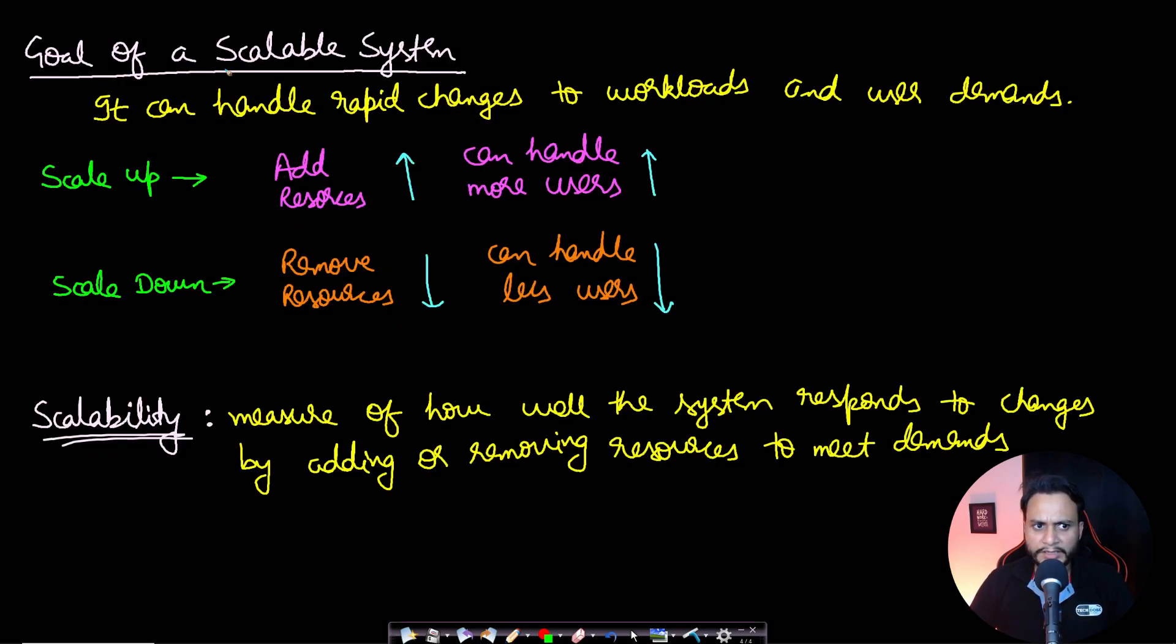Therefore, what is the goal of the scalable system? The goal is it can handle rapid changes to the workloads and the user demands. If the number of users are increasing and you have to serve higher load, then we will add resources and this is known as scaling up. When the number of users are significantly lower, then we will not waste up the resources but instead we will remove the resources so that it can be utilized by some other jobs running, and hence we are removing the resources. This is known as scaling down the system.